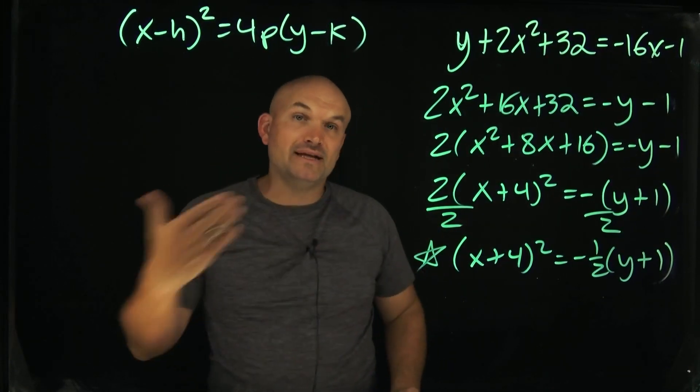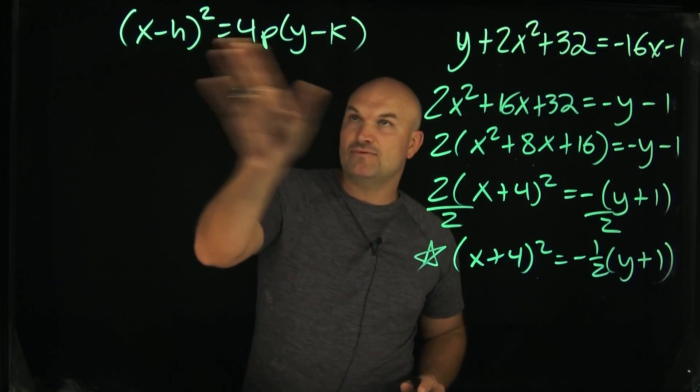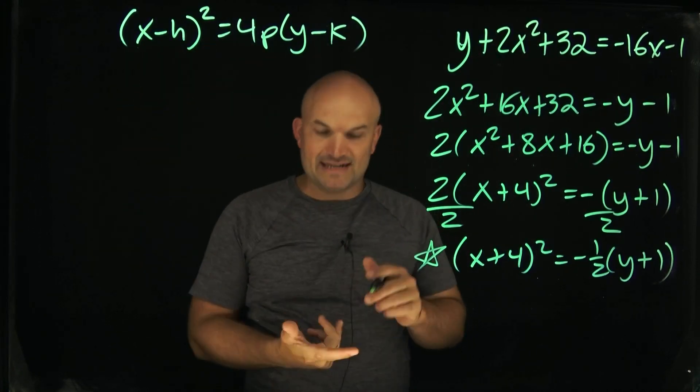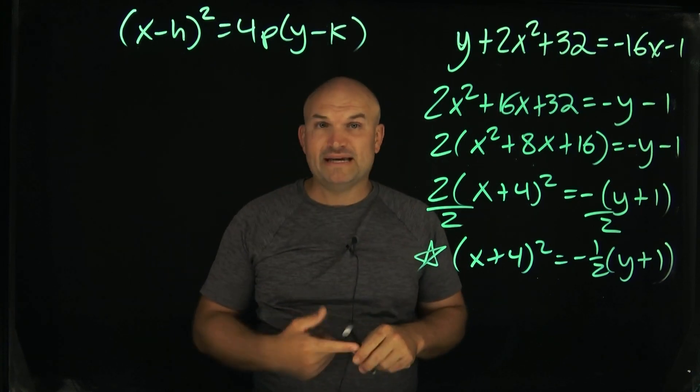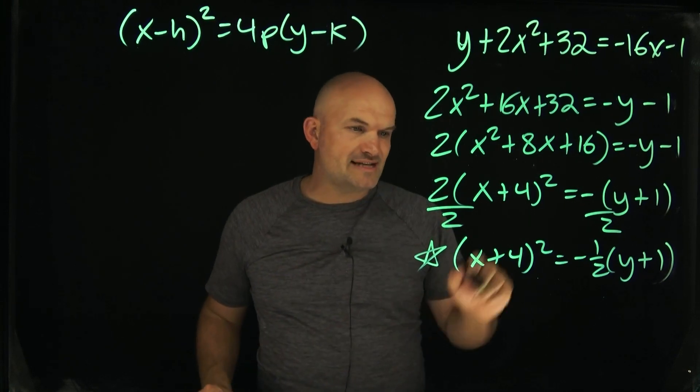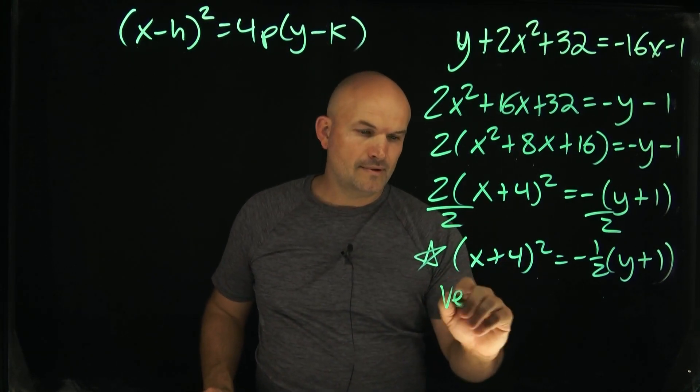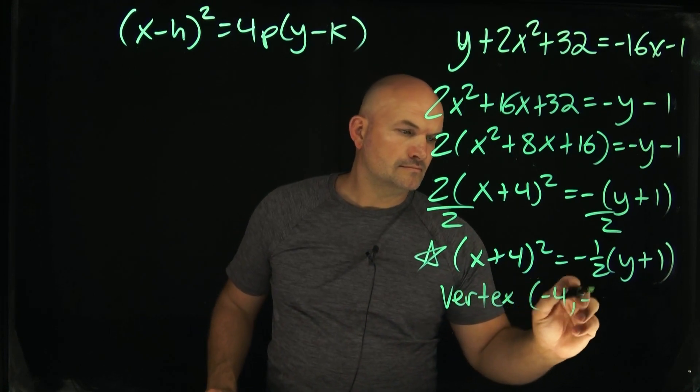Now I have completed it in standard form. So now what I can do is I can now start completing the elements of identifying the parts of my quadratic. The first part is obviously when we are in the standard form is we can identify vertex as well as our value P. Remember, P is the distance from your vertex to your focus as well as to your directrix. So in this case, my vertex is going to be negative 4 comma negative 1.